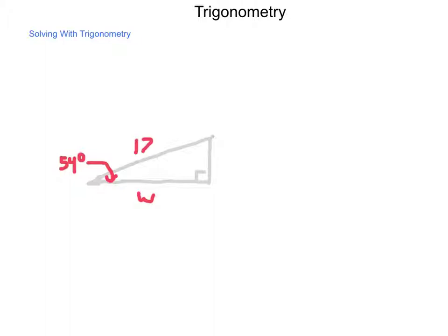The first question is, what is the relationship between this angle that we have here and these two sides of the triangle? From this angle, 17 is the hypotenuse, and this W is immediately next to angle 54. So we're looking at the adjacent side, or the adjacent leg. The ratio that involves the adjacent and hypotenuse is the cosine function.